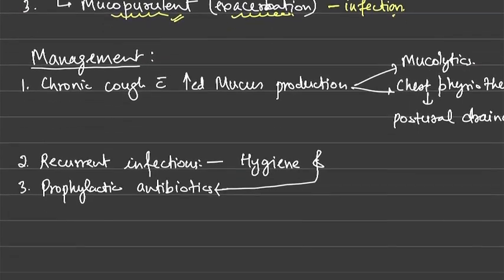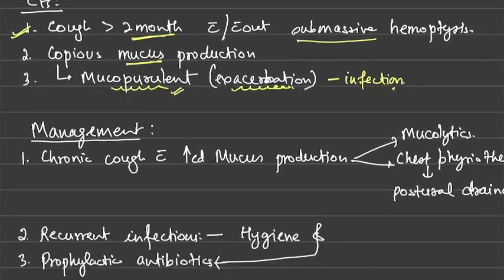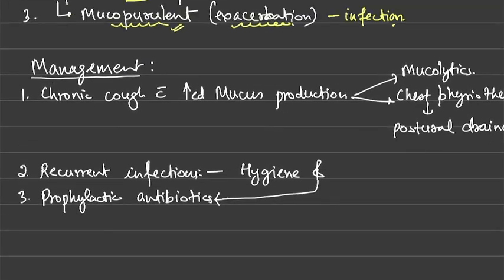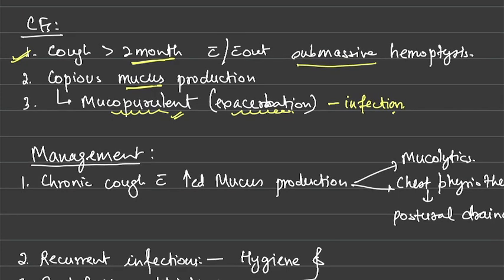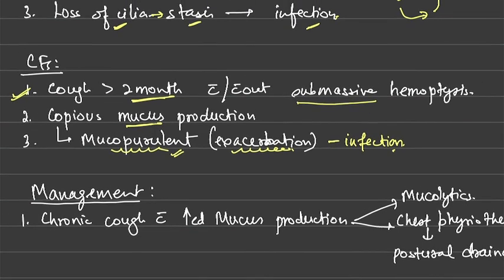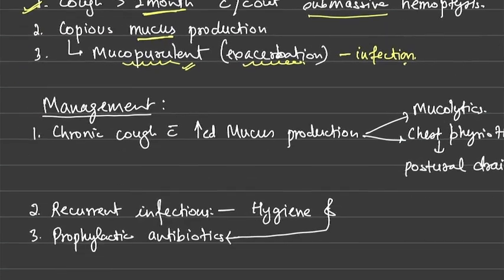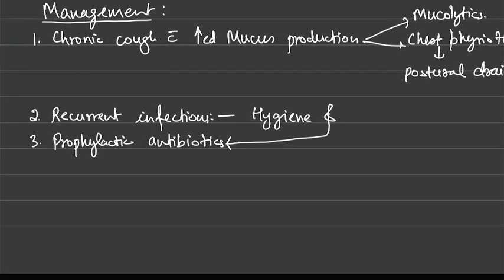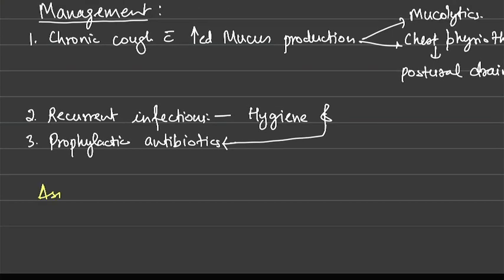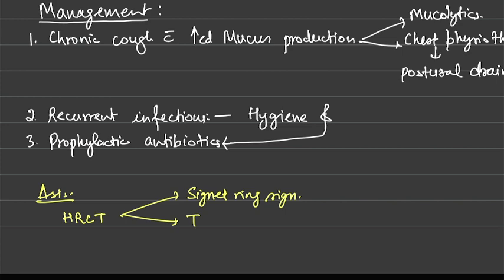For diagnosis of bronchiectasis, we assess clinical features, perform a chest X-ray, and the investigation of choice is HRCT. On HRCT, two signs need to be remembered: the first is the signet ring sign, and the second is the tram track sign.